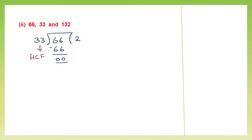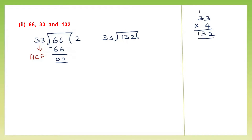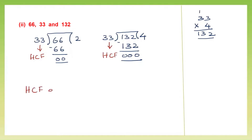Now I'm going to use 33 and 132 to find the HCF. So we put 132 inside and 33 outside and divide. 33 into 4: 4 threes are 12 carry 1, 4 threes are 12 plus 1 is 13. So 33 into 4 gives us 132 itself — we've got the remainder 0. The last divisor that gave us the remainder 0 is the HCF. So the HCF of 66, 33 and 132 is 33.